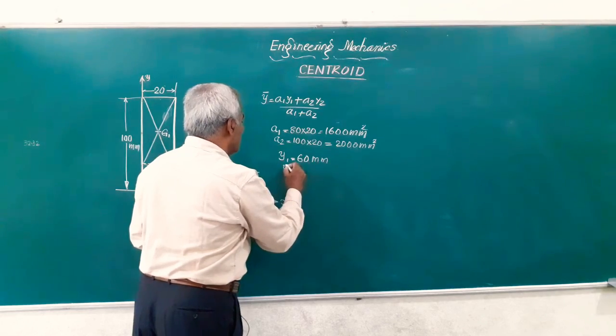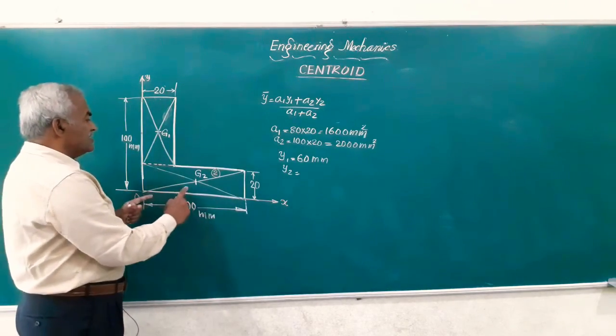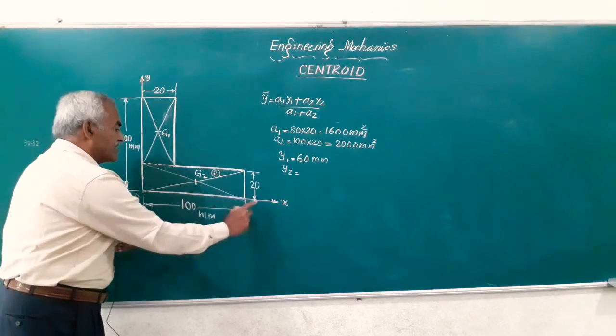On the same line, y2 works out. What is y2? y2 is the distance of g2 from xy or ox.